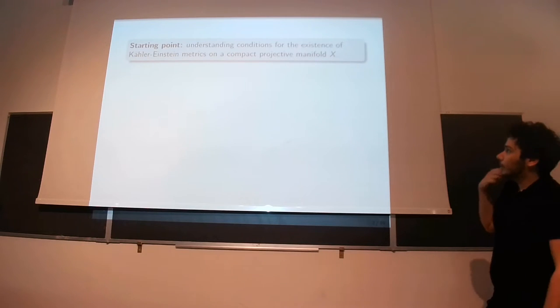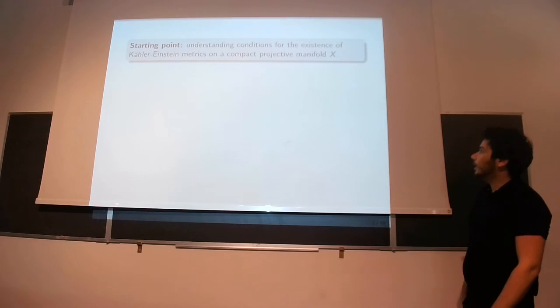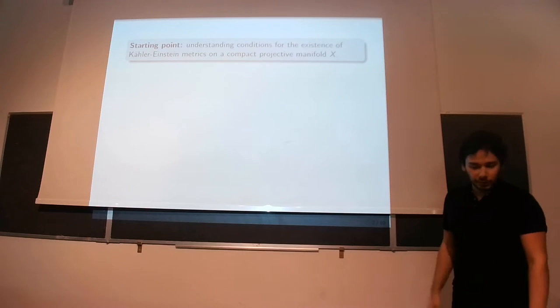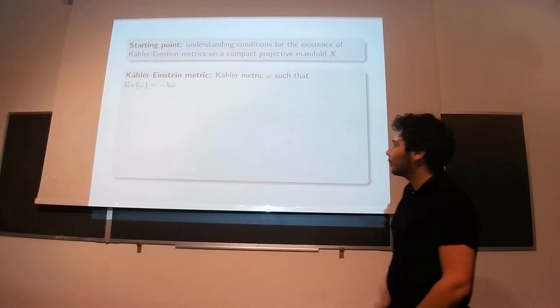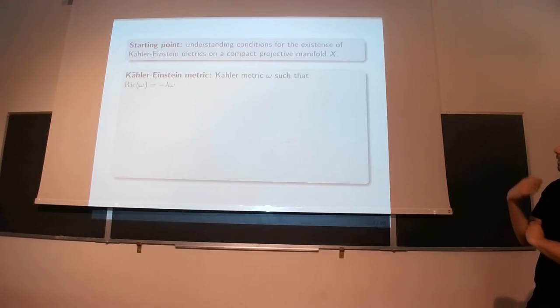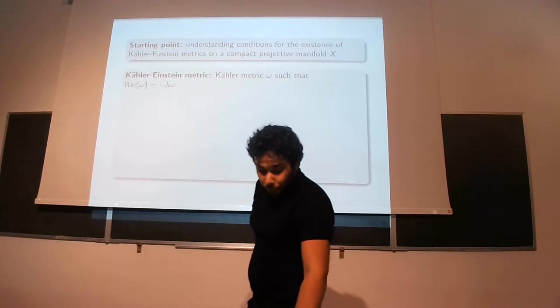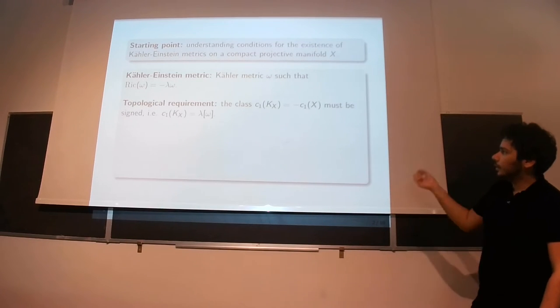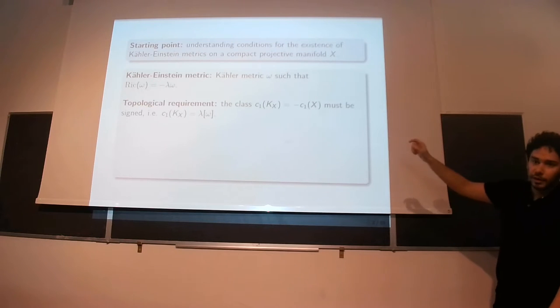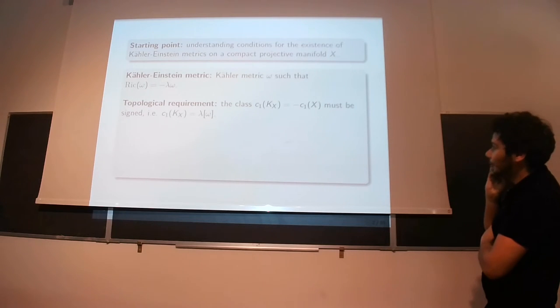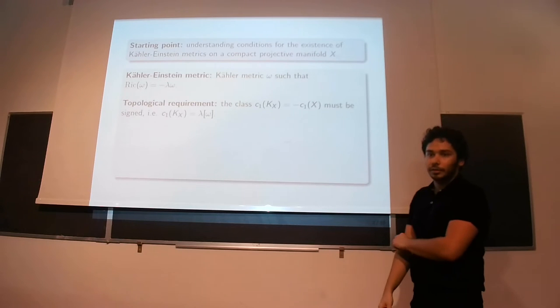So the starting point is that we pick a compact, complex, relative manifold X, and we want to understand some conditions for when there are Kähler-Einstein metrics on it. So I'll start with the definition. A Kähler-Einstein metric is one that is proportional to its Ricci curvature. So for such metrics to exist, we first need some topological conditions to be satisfied. The first class of KX, so KX here is the canonical bundle, which is just minus the first Chern class of the tangent bundle. So this class must be signed.